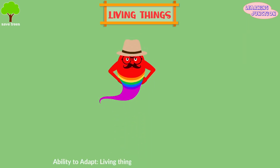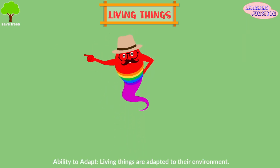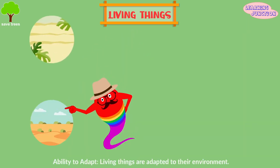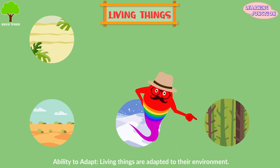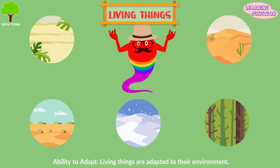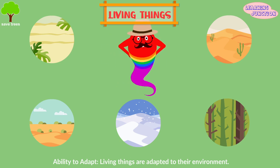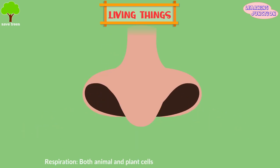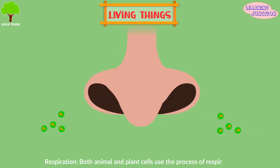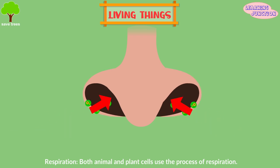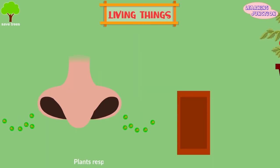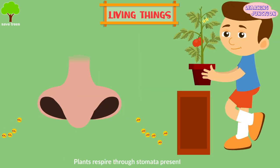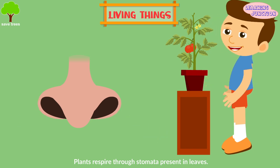Ability to adapt. This means that the way they behave, the way they look, or their way of life makes them suited to reproduce and survive in their own habitats. Respiration. Both animal and plant cells use the process of respiration to release energy from glucose, though the process may differ between them.